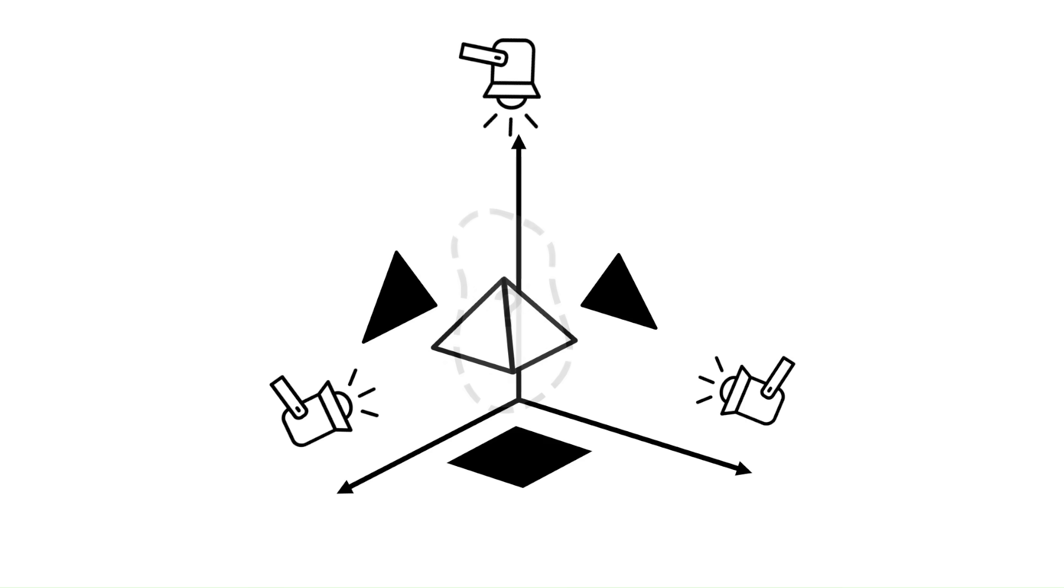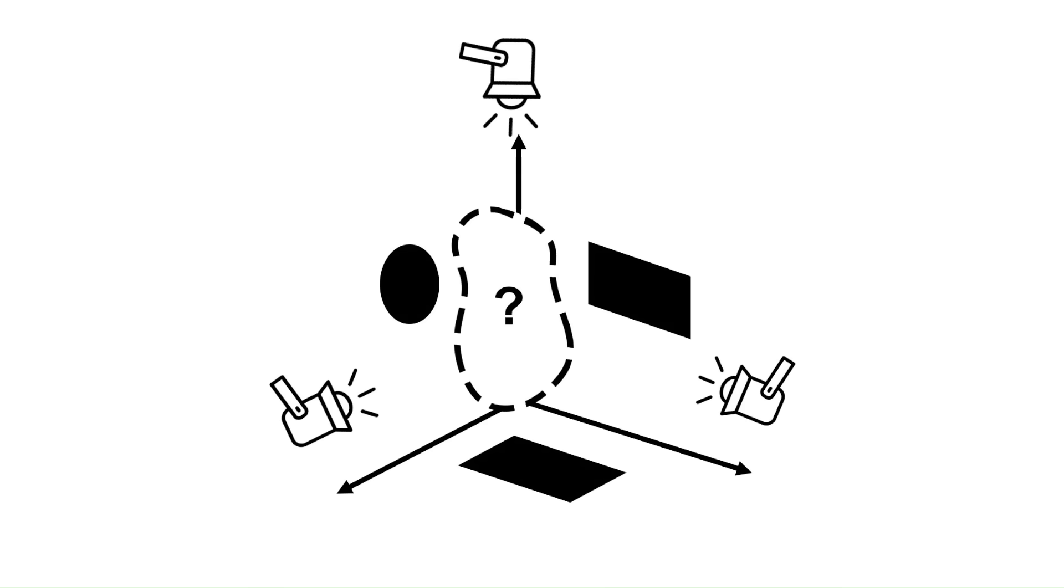Did you say pyramid? Okay, what about these shadows? A circle and two rectangles. Yep, that's a cylinder.